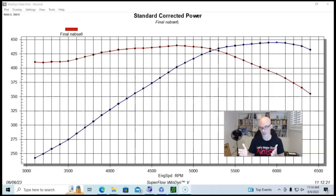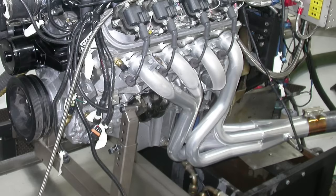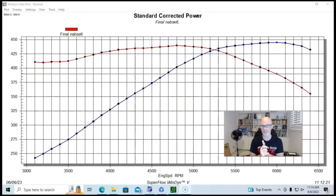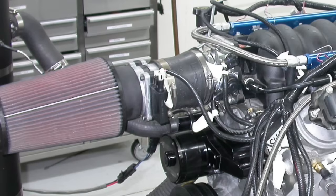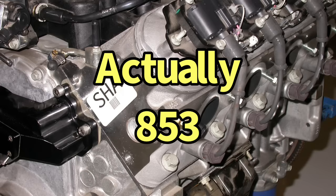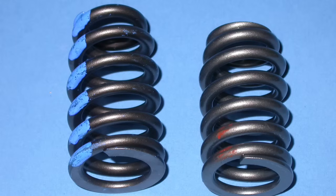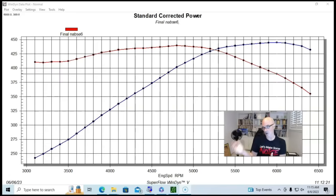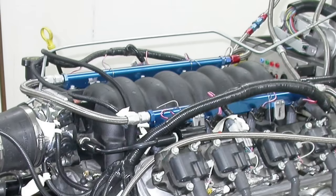I used that cam a lot back in the day because we knew that it fit and it worked and we knew what kind of power it made. And it seemed to work well with everything. It was a blower cam, turbo cam, nitrous cam. It did all of that stuff. So we started out running our 5.7 liter LS1 crate motor naturally aspirated.